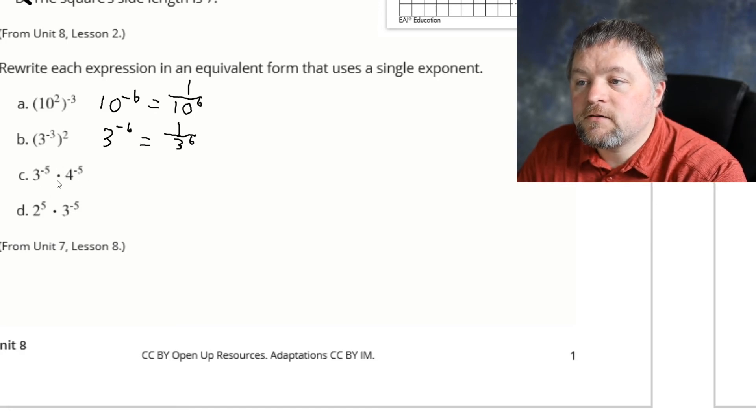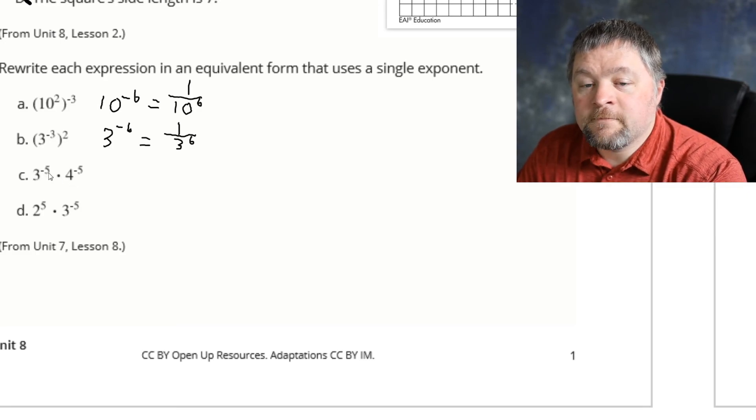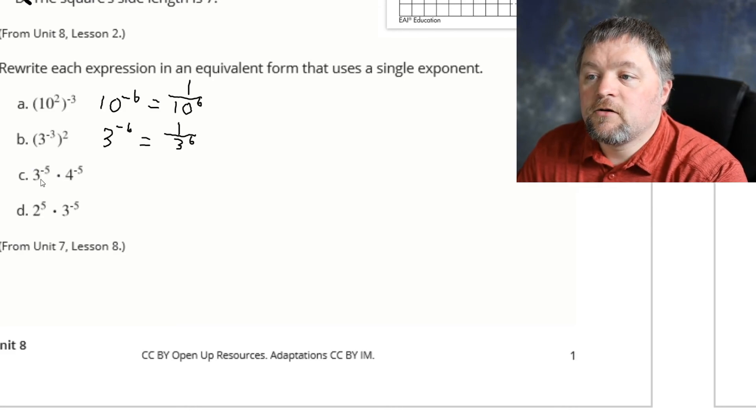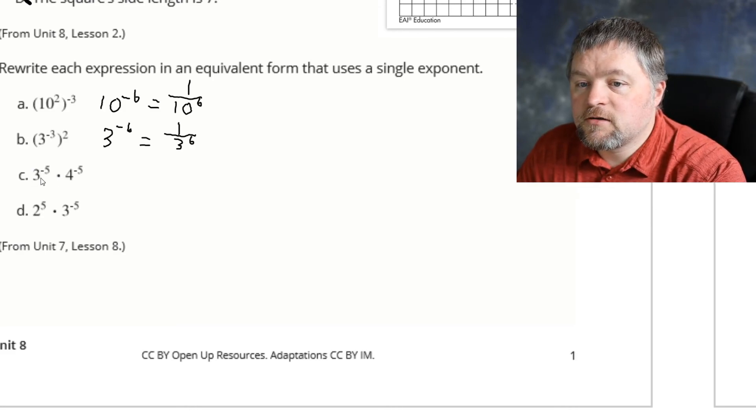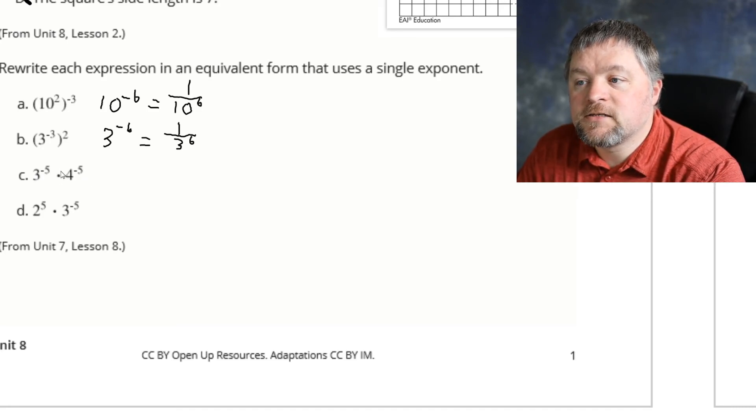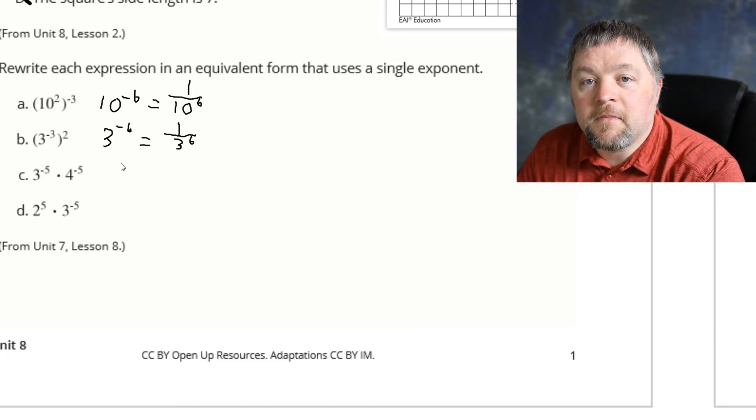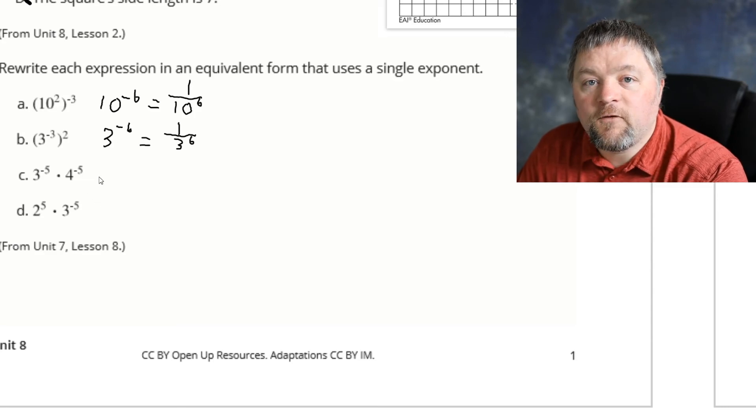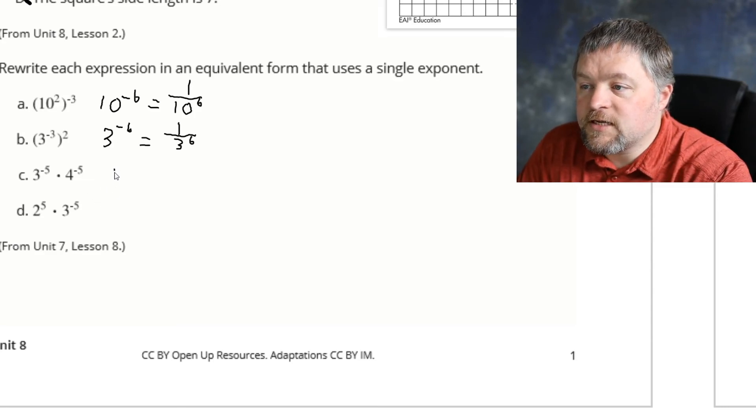Our next one, we are multiplying, but we do not have the same base, which means we cannot just combine the exponents. However, because we have the same exponent, we can multiply bases. 3 times 4 is 12. So this is equivalent to 12 to the power of negative 5, or 1 over 12 to the power of 5.